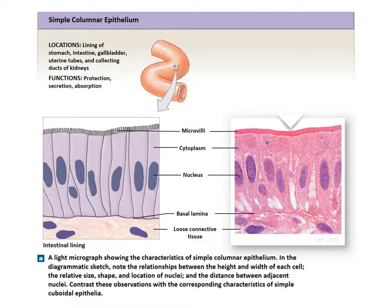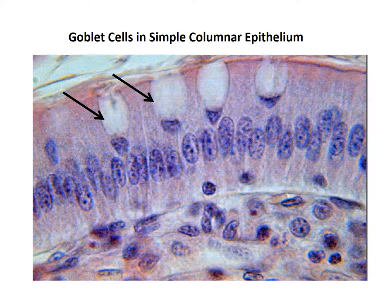Moving to columnar cells — they are longer than they are wide and look like cuboidal cells in transverse sections. They are marked by the polarity of their nucleus and organelles and are for protection, absorption, and secretion. Simple columnar is found throughout the stomach, intestines, uterine tubes, and many excretory ducts. It provides very limited protection but is excellent for absorption and secretion, and usually contains microvilli or the brush border. Here we can see simple columnar epithelial cells from the digestive tract that also contain goblet cells, which secrete a mucus-like layer across the cell surface membrane to protect it from acidic damage.